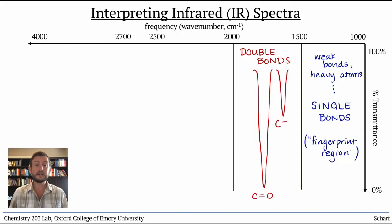Alkenes, C=C double bonds, are usually between 1500 and 1700 wavenumbers. These peaks are often quite weak, because C=C bonds aren't very polar.